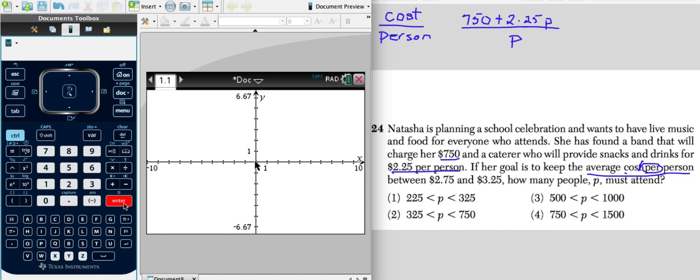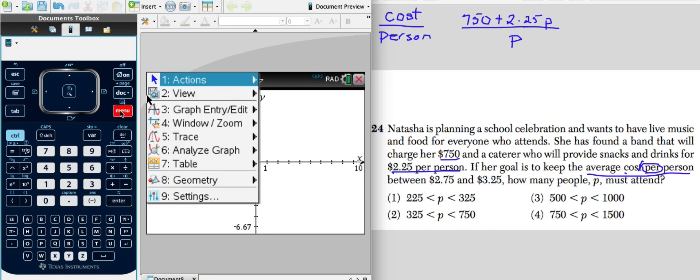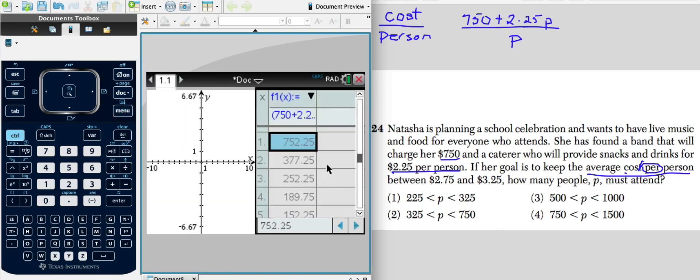We could readjust this, but we want to look at the table here. So I'm going to go to table and split screen view. And now I have the values for what it costs. If there's one person going, the average cost is $752.25. And as you can see, as more people attend, the price goes down. Of course, we're pretty far away.